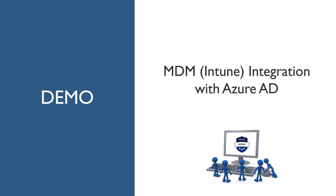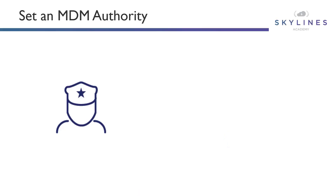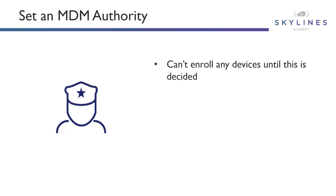Next we're going to talk about MDM Authority. Simply put, the MDM authority is the single point of interface that allows you to manage your devices from an MDM perspective — whether you're using System Center, Intune, a mixture of the two, or even MDM for Office 365.